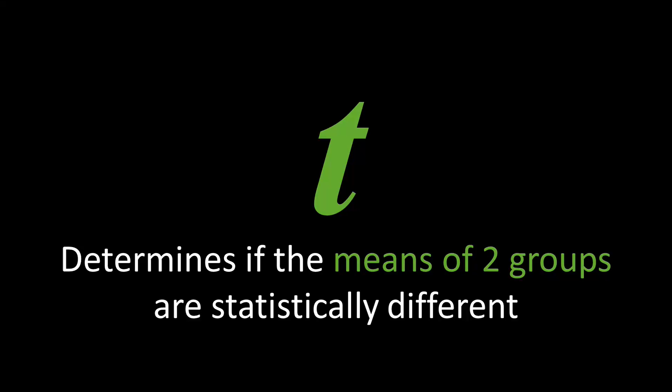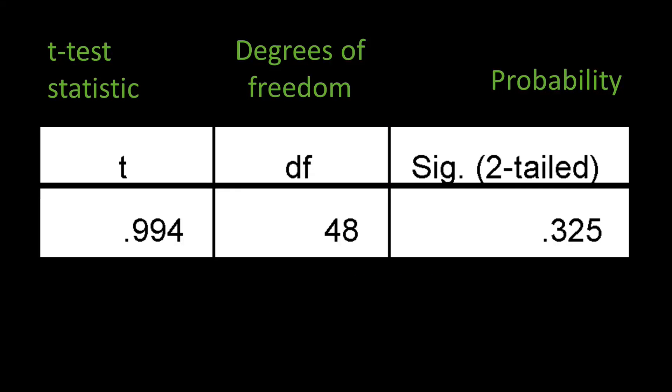After inputting and analyzing your data, you might find results that look like this. The little t shows the value of the t-test statistic. df shows the degrees of freedom, and sig stands for significance, also known as the probability.